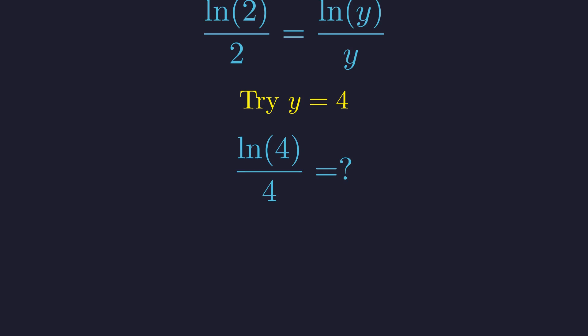We need to check if the natural log of 4 divided by 4 equals our target value. Here's a clever trick. 4 is just 2 squared. Using the power rule again, we can bring that 2 down to get 2 times natural log of 2 all over 4. And look at that. The fraction simplifies to exactly natural log of 2 over 2. It's a perfect match.